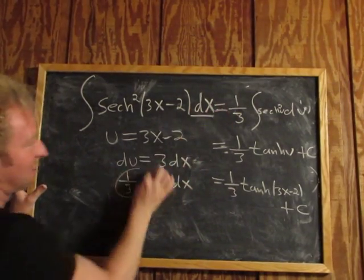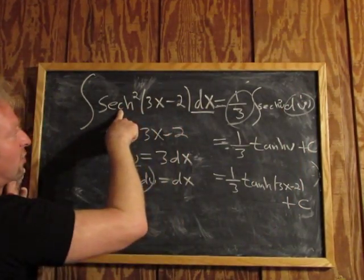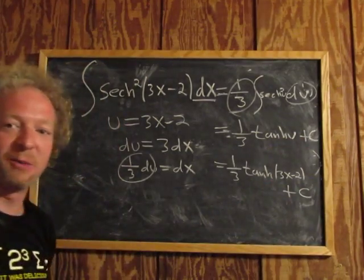So dx equals this. That's this and this. And then hyperbolic secant squared of u is that, and then you go from there. I hope that made some sense.